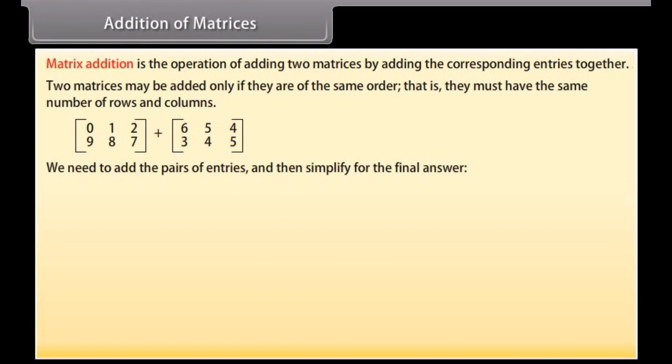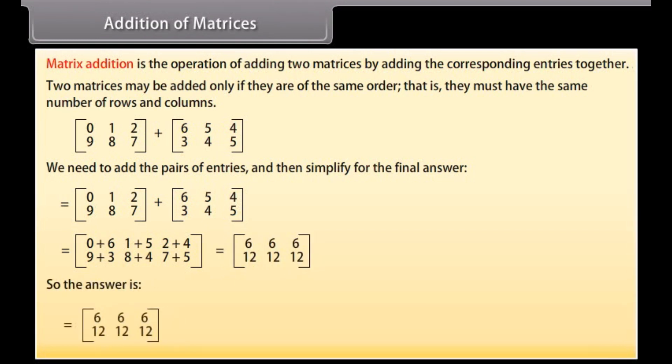We need to add the pairs of entries and then simplify for the final answer. Row-wise, 1st row 0, 1, 2, 2nd row 9, 8, 7 plus row-wise 1st row 6, 5, 4, 2nd row 3, 4, 5. Row-wise 1st row 6, 6, 6, 2nd row 12, 12, 12. So, the answer is row-wise 1st row 6, 6, 6, 2nd row 12, 12, 12.